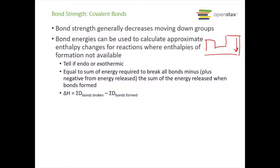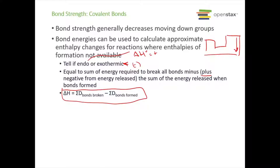This is approximate — it's not going to be perfect, but it gets you a fairly decent ballpark number. It can tell us if the reaction is endothermic or exothermic based on the sign for delta H. Endothermic if delta H is positive, exothermic if it's negative. Delta H is equal to the sum of the energy required to break all the bonds minus the sum of the energy released when those bonds form. Energy released carries a negative sign since it's exothermic. So the equation is: delta H equals the sum of bonds broken minus the sum of bonds formed.